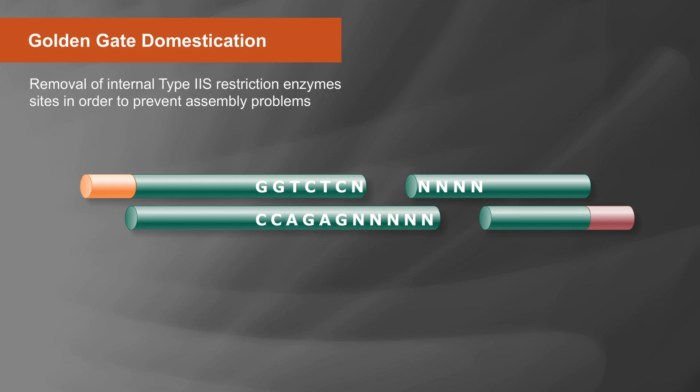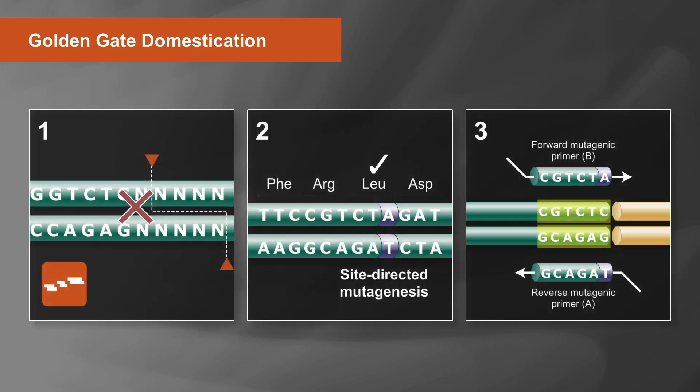Removal of internal type 2S restriction sites in order to prevent these assembly problems is referred to as Golden Gate Domestication. Here are three ways you can manage internal sites in your DNA to ensure a successful assembly.